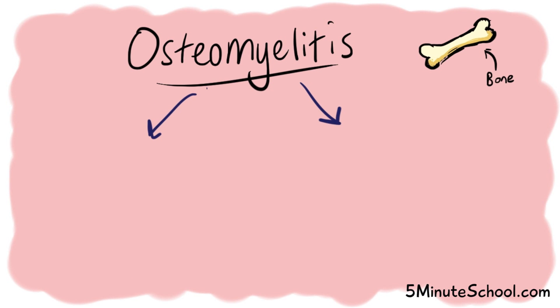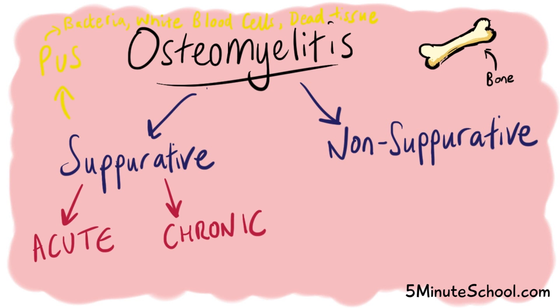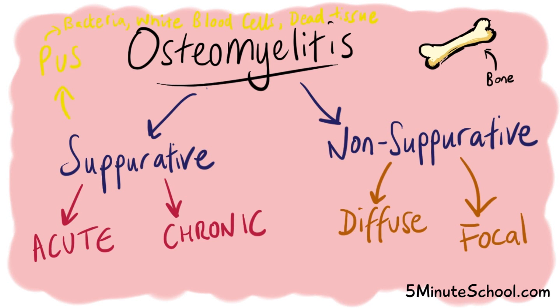Osteomyelitis can be divided into several categories depending on whether there is suppuration or if there is no suppuration. Suppuration basically means that there is pus formation. In this video we're going to focus on the acute suppurative phase of osteomyelitis and the chronic suppurative phase.